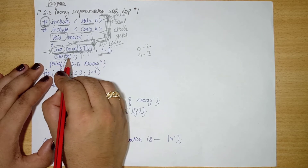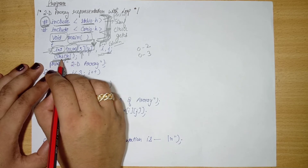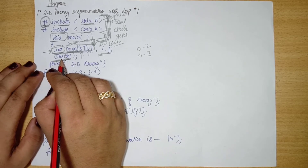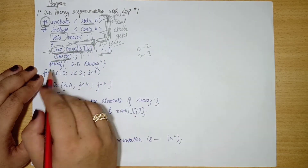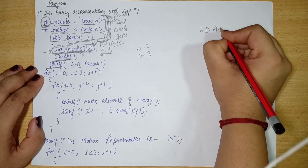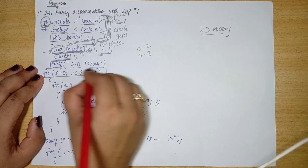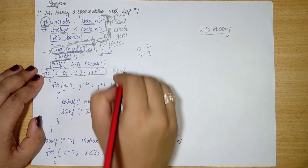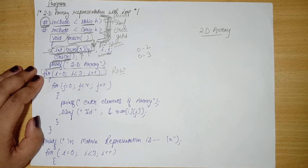clrscr() clears the screen so that the output of the previous program does not show. We then use printf to print a message, for example 'Enter elements of 2D array'. We use nested loops — most programs are written in row major order, so we use the outer loop for row and the inner loop for column.